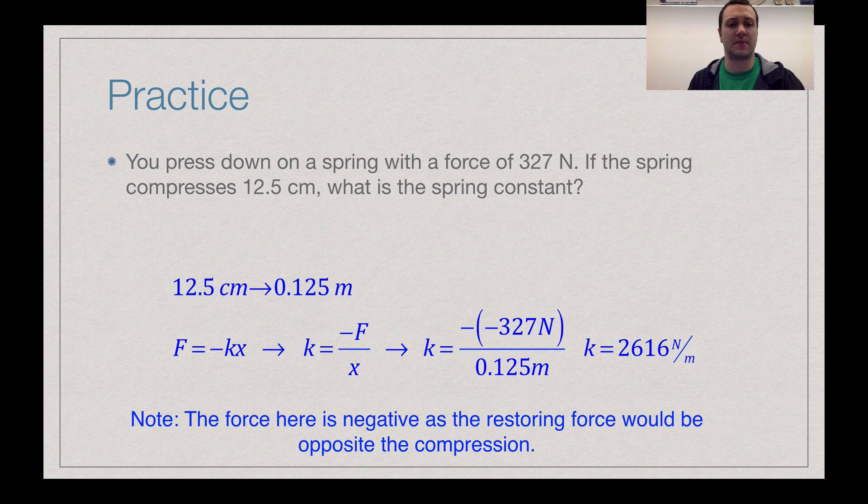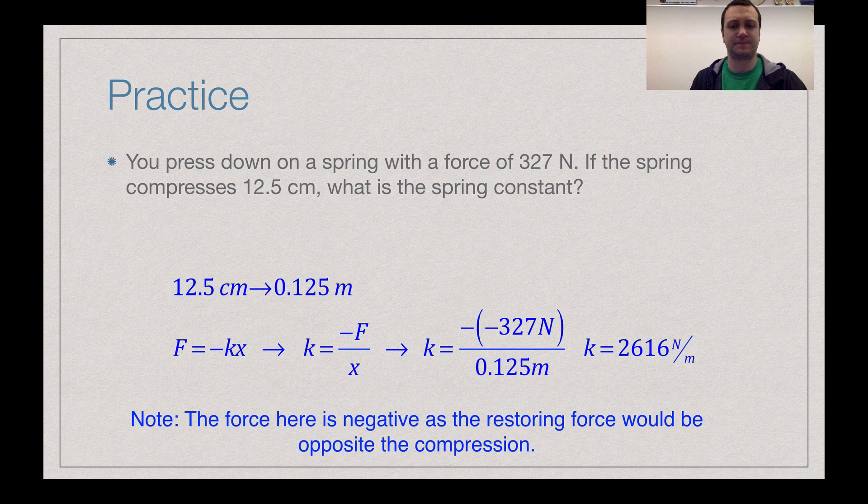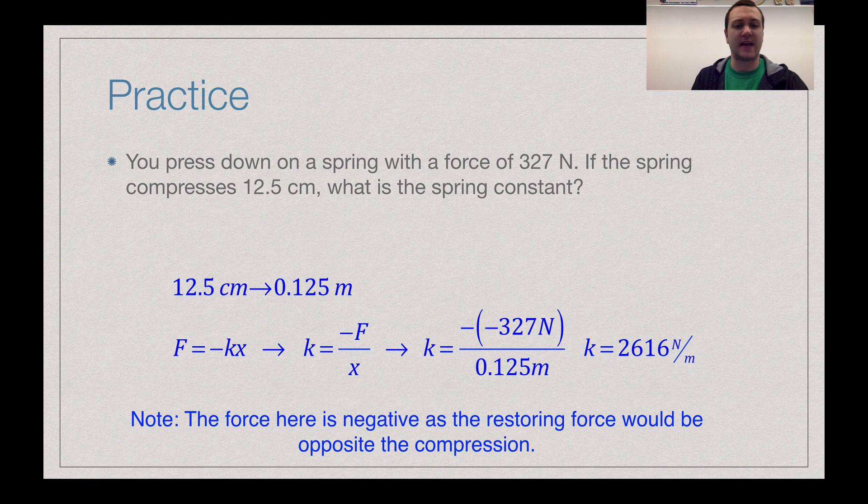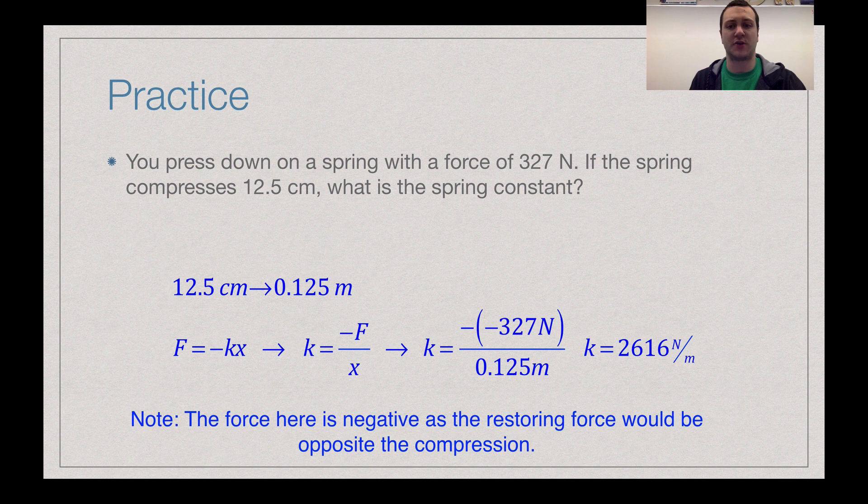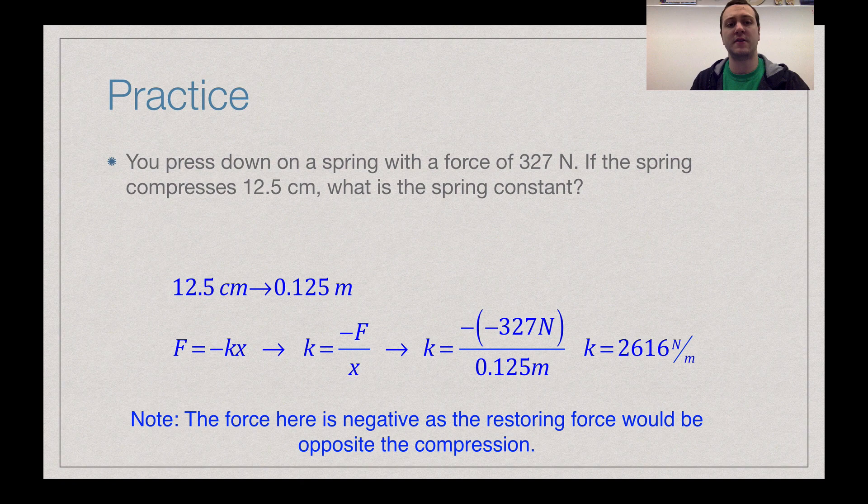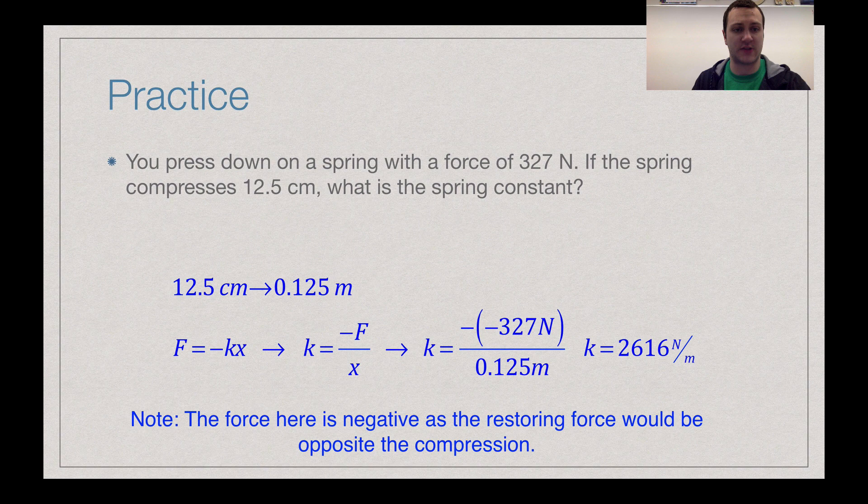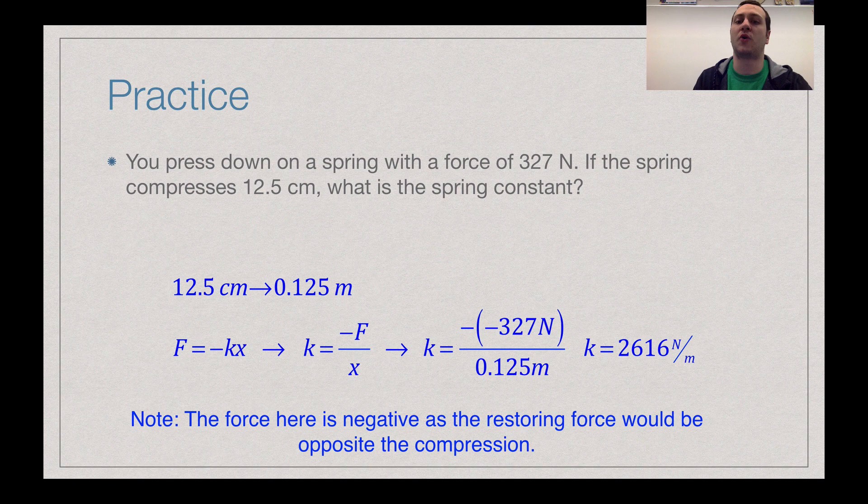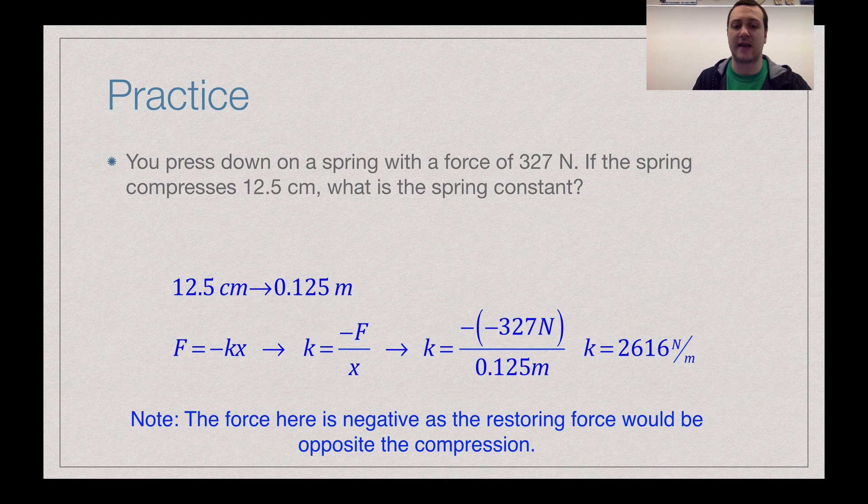First thing you have to look at here is 12.5 centimeters converting to 0.125 meters because the newton is based on the meter, not on the centimeter. So as we rearrange this to solve for K, we're going to get negative F over X. And now I want you to see one thing with what we did with the restoring force. We called that restoring force negative. Here's why. Based on that spring compression of 12.5 centimeters, you'll notice that I considered in this context compression to be positive. So I consider that 12.5 centimeters of compression to be positive X. The restoring force has to be in the opposite direction, which then tells us that that force has to be negative.